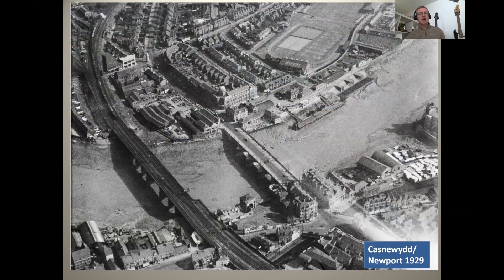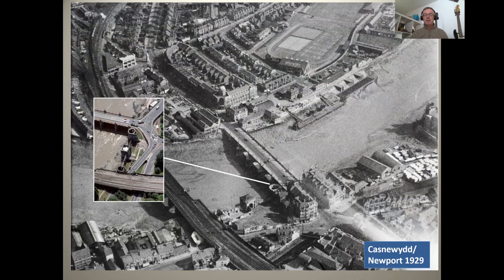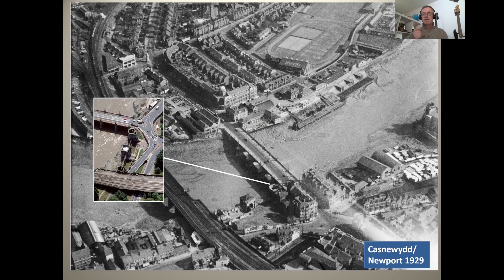Moving forward to 1929, another stunning aerial photograph from the Aerofilms collection. We have another sawmill between the two bridges, and the remains of the castle wedged between them. The redevelopment of those roads in modern times and the placement of a big roundabout has demolished a lot of the buildings that were once close to the castle, but we can see it's still hanging on in the townscape today. So these early photographs are a really valuable way to see how townscapes and the landscape have changed.